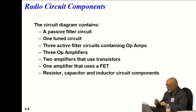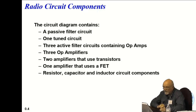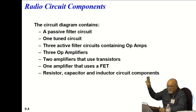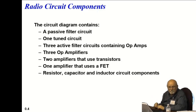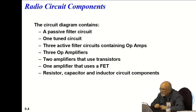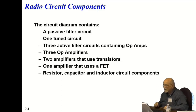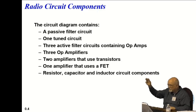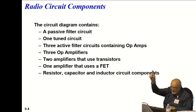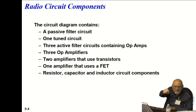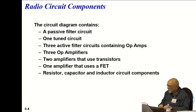Now if you look at this particular circuit, it contains a passive filter. What did I tell you about a passive filter — what are its three components? Capacitor — that's one. Resistor — that's another. Inductor. So the three passive circuit components are capacitor, resistor, and inductor. Simple as that.